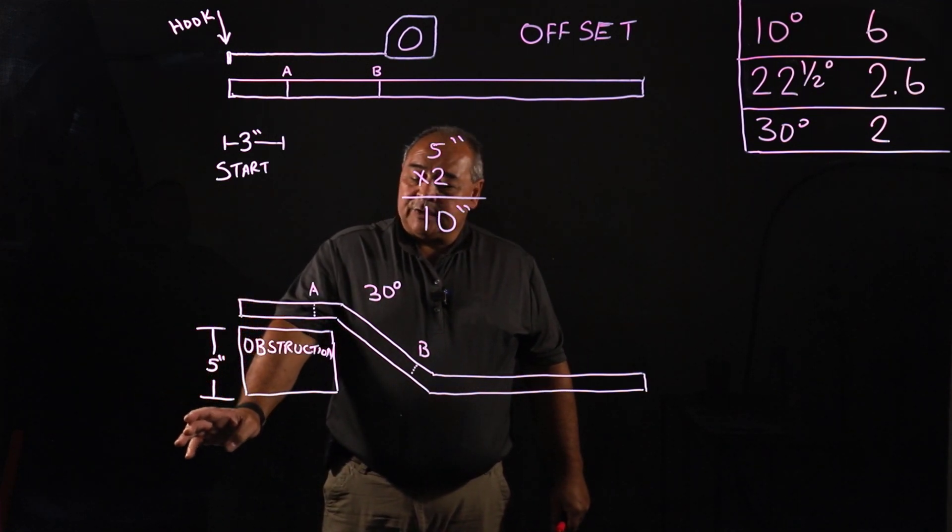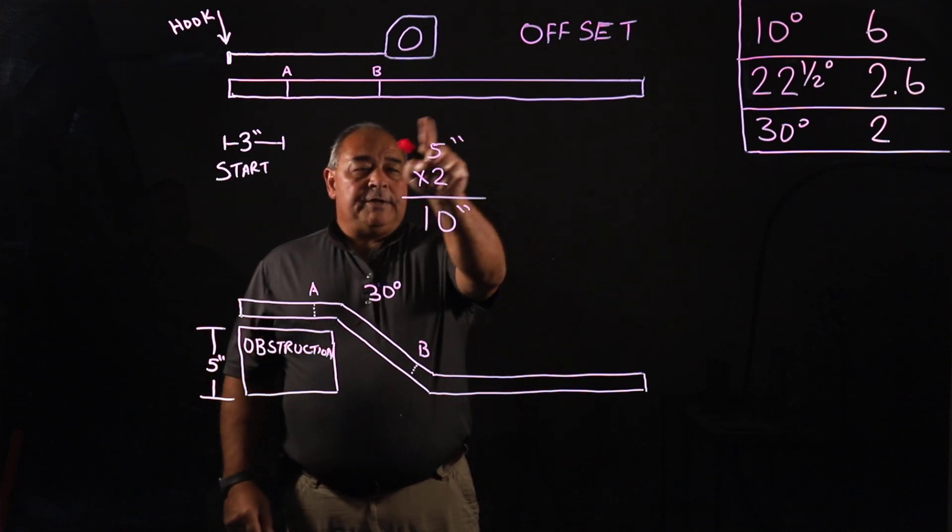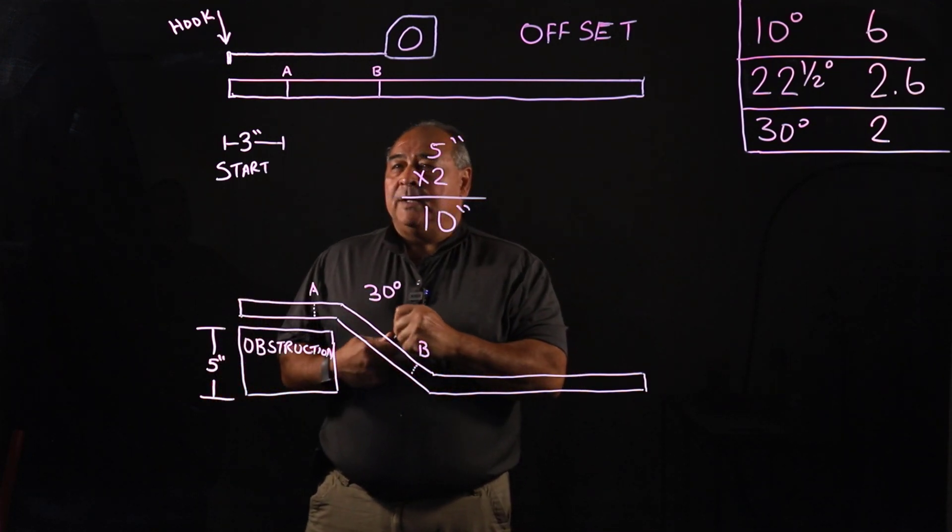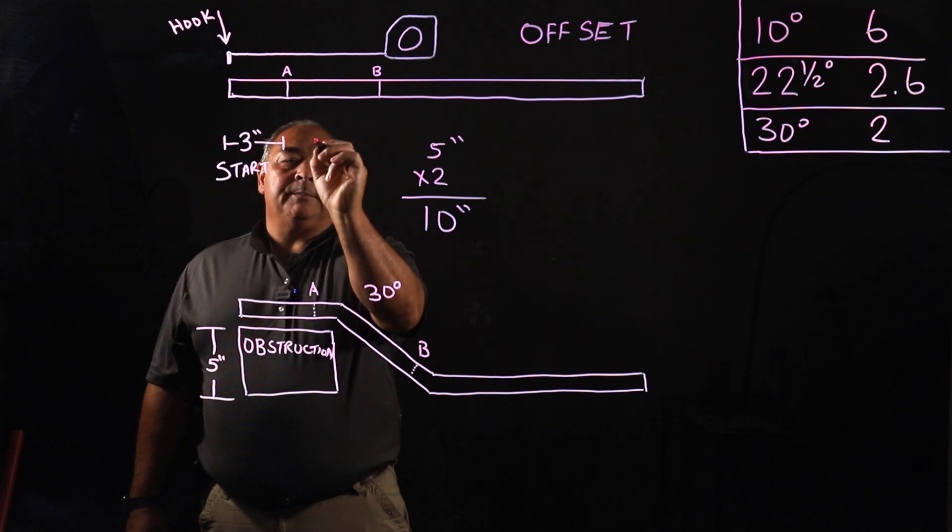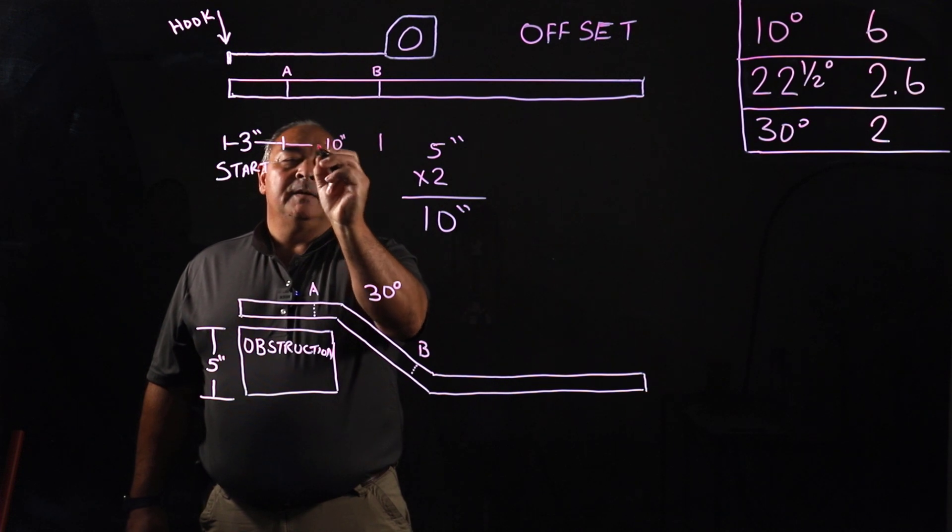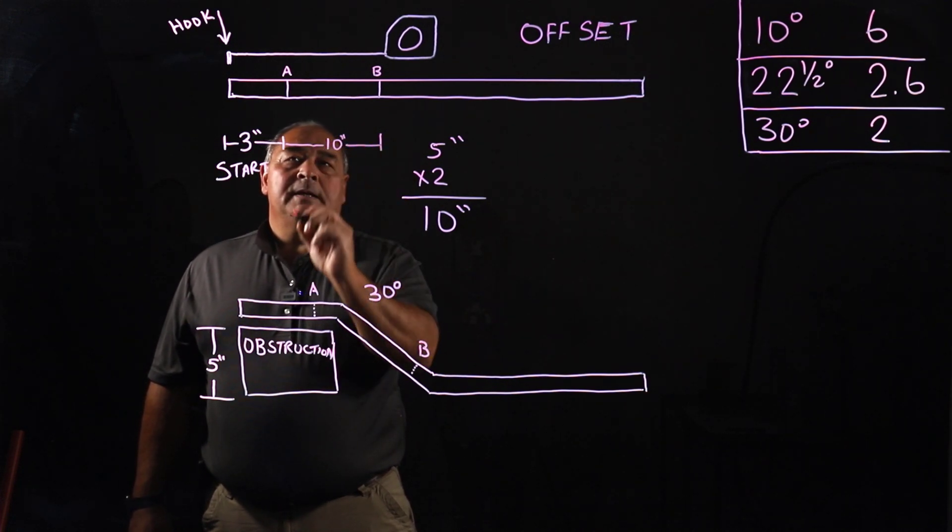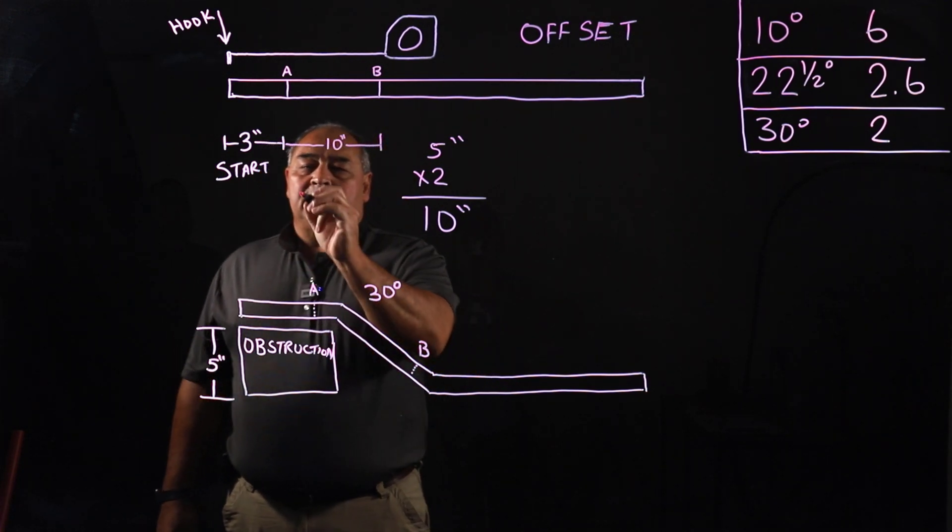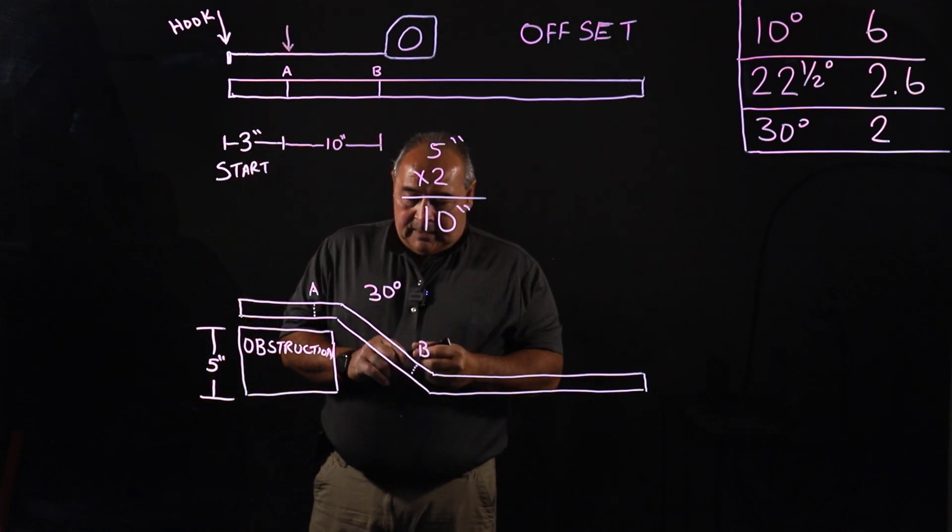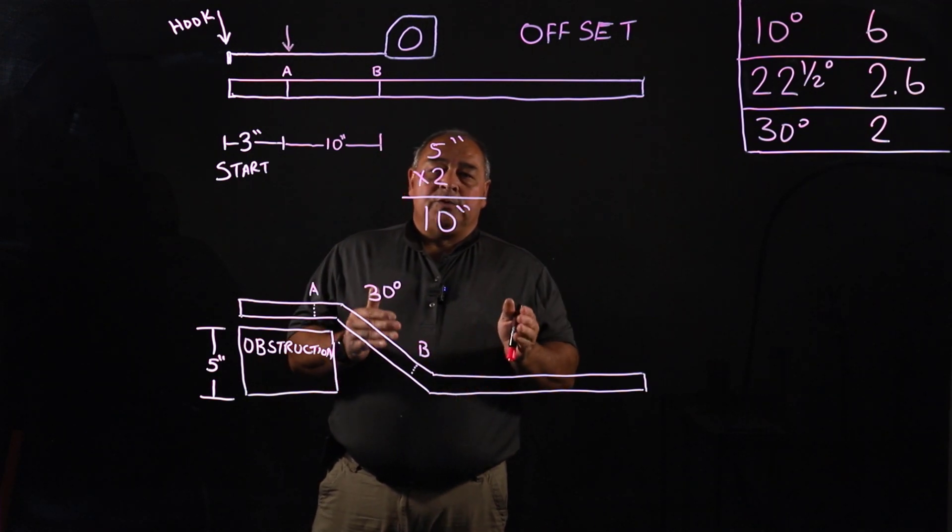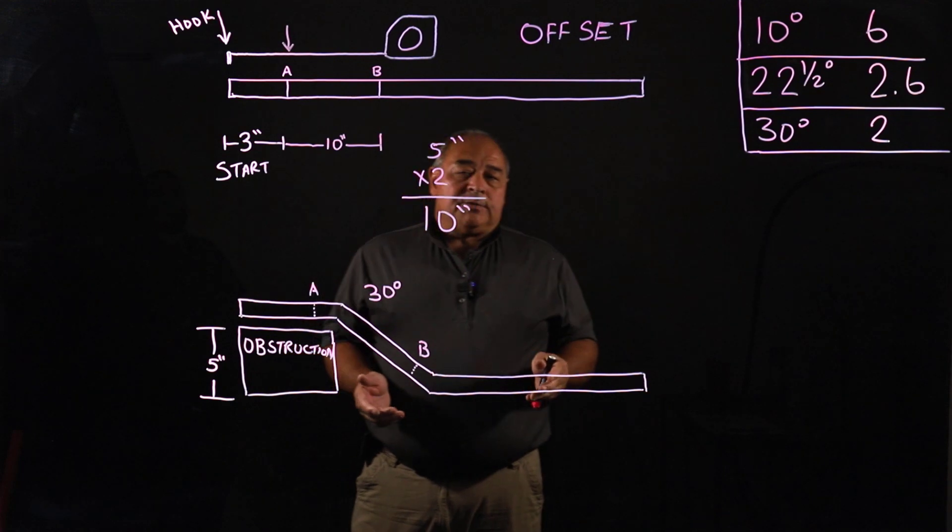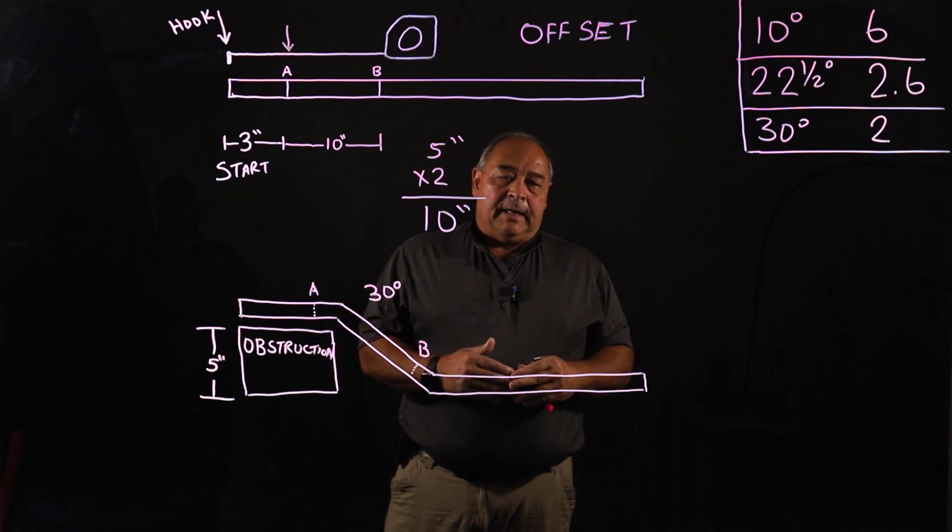For this five inch obstruction that we're looking at, our multiplication was five inches times two, which is 10 inches. So from mark A to mark B would be 10 inches. And everything references off of mark A. That is one thing that in all kinds of bending, once you establish where mark A is going to be, all other measurements refer back to mark A.